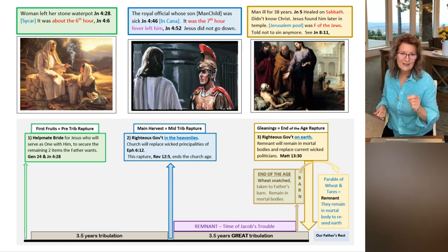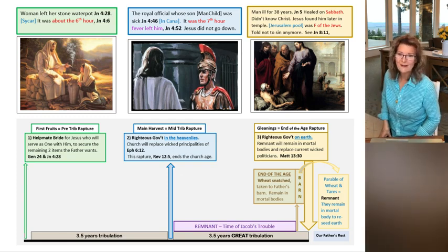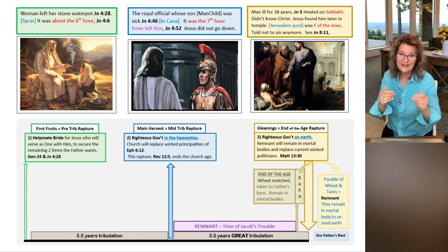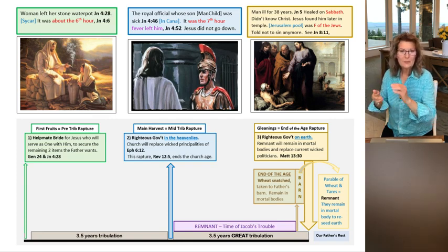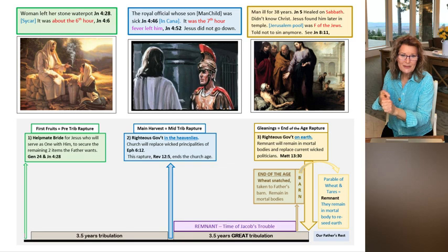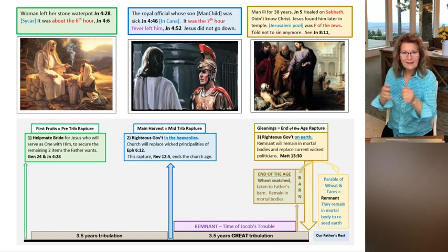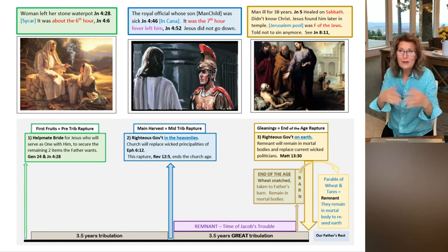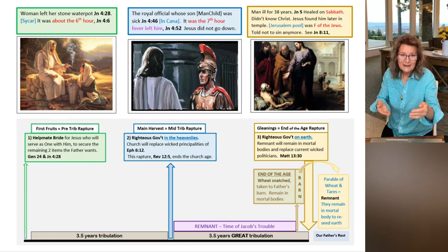This is exactly what Jesus was doing. As we watch him for three and a half years in the Gospels, he was acting out Daniel's 70th week—the pre-trib rapture of the bride, the mid-trib rapture of the church, the government of God. Then he was acting out the remnant being gathered in one place—they're all sick, downcast, ill, and have no man to help them.